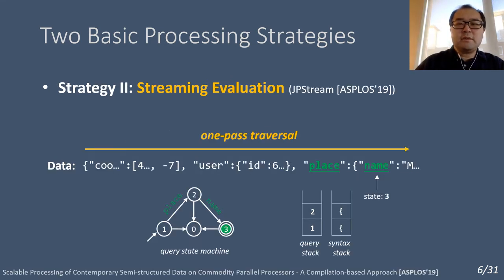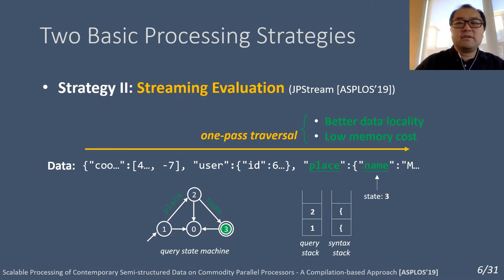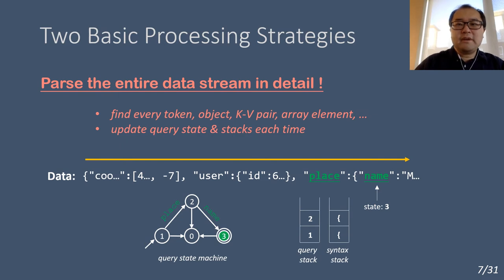Fortunately, both issues can be naturally addressed by adopting a streaming-based query evaluation strategy. The high-level idea is to combine parsing and query into a single path. To achieve this, a recent work, JPSstream, proposed a dual-stack pushdown automaton, which encodes the query matching and parsing logic into a set of transition rules. In this way, it not only achieves better data locality, but also eliminates the need for constructing any in-memory parsing tree, thus minimizing the memory footprint. Though streaming evaluation sounds promising, its existing design requires scanning the entire data stream in detail, including identifying all the tokens and syntactical structures, and feeding them into the query automaton to track the matching progress.